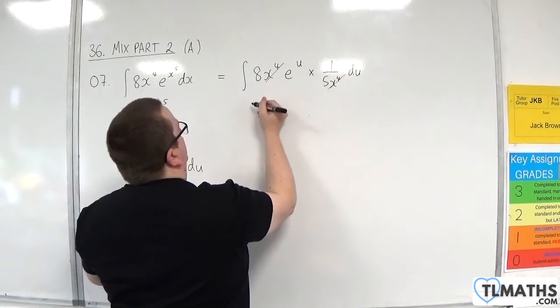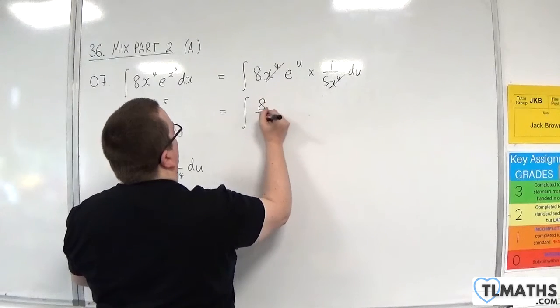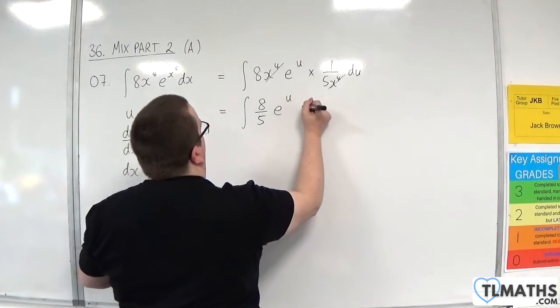The x to the 4s cancel. I have 8 fifths, e to the u, du.